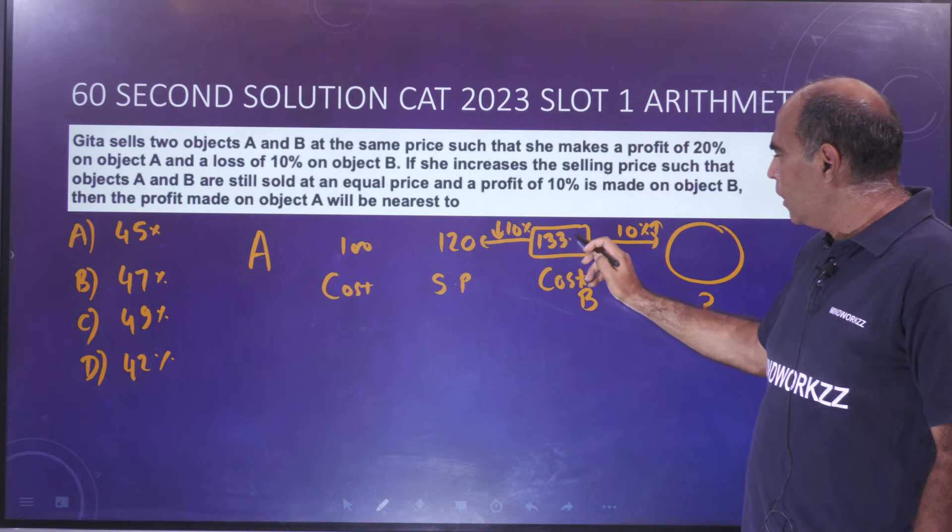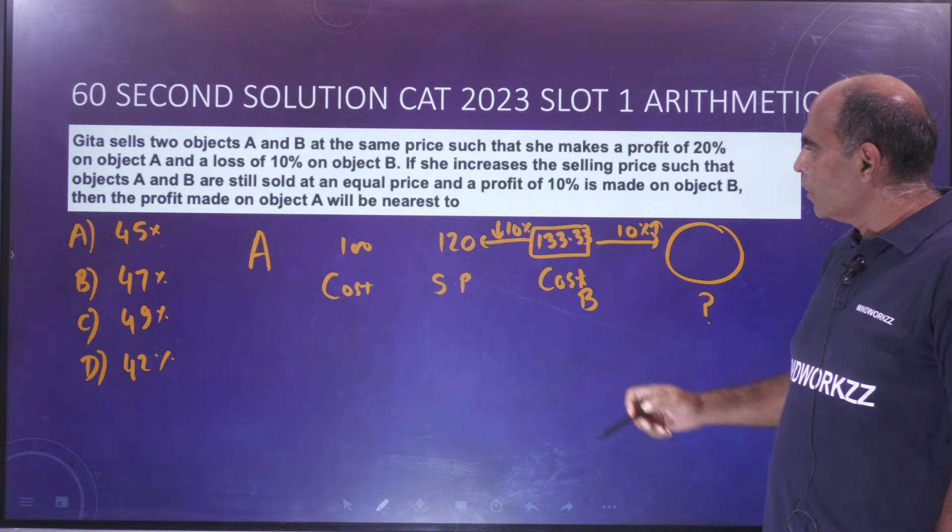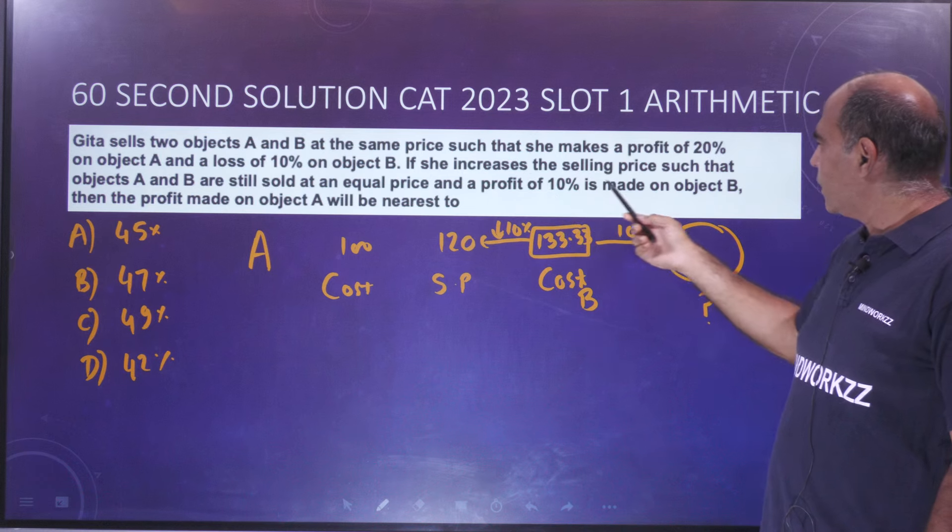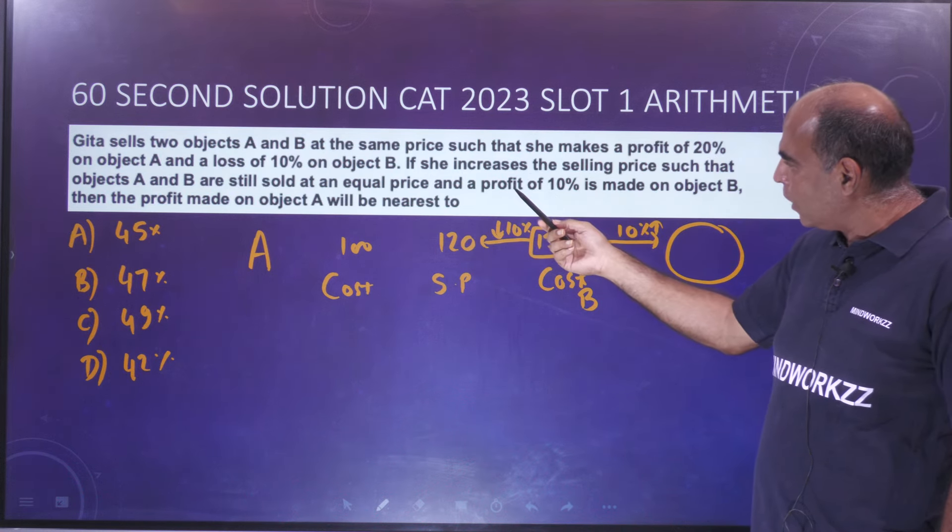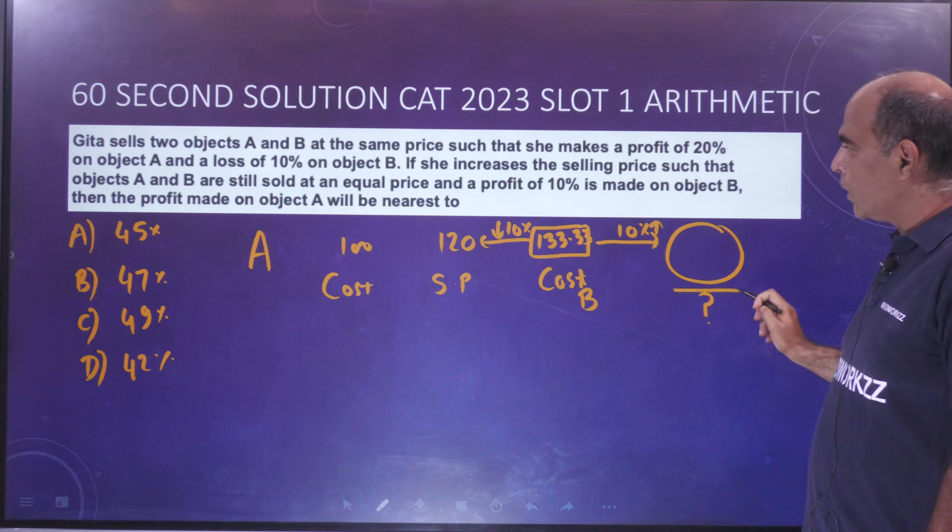The question further says if the selling price such that both objects A and B are still sold at an equal price. So they are sold at the same price and a profit of 10% on object B.